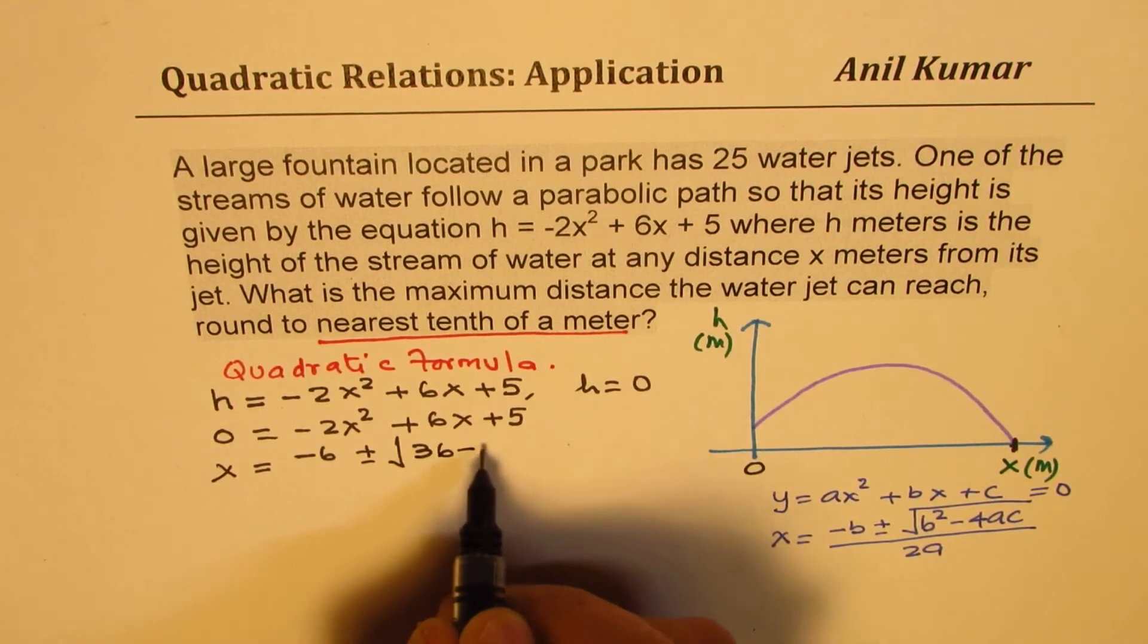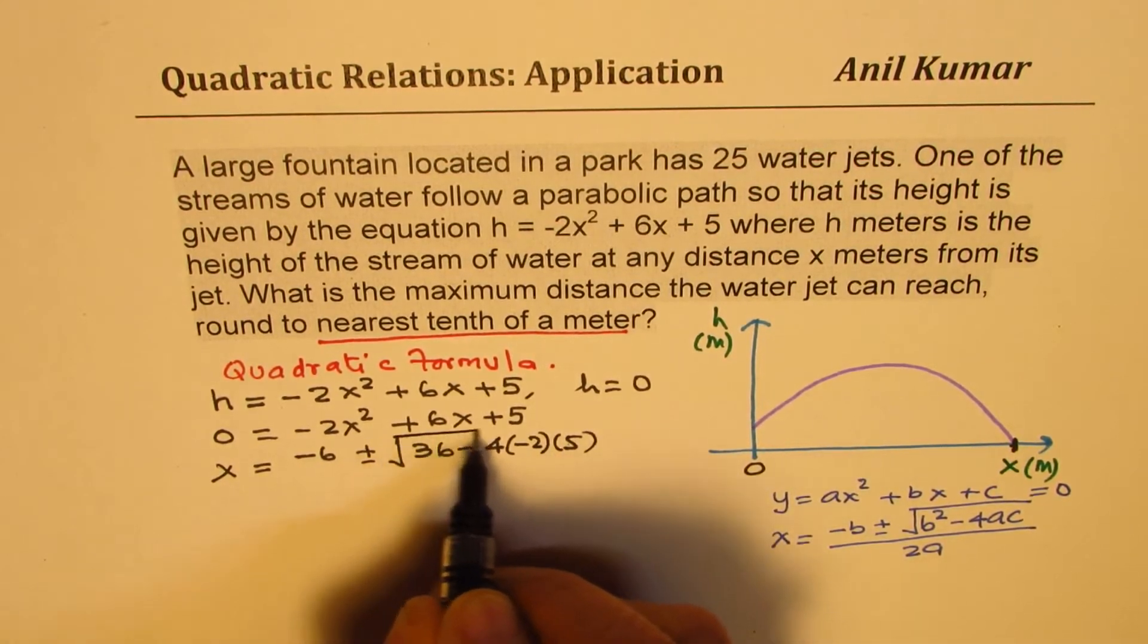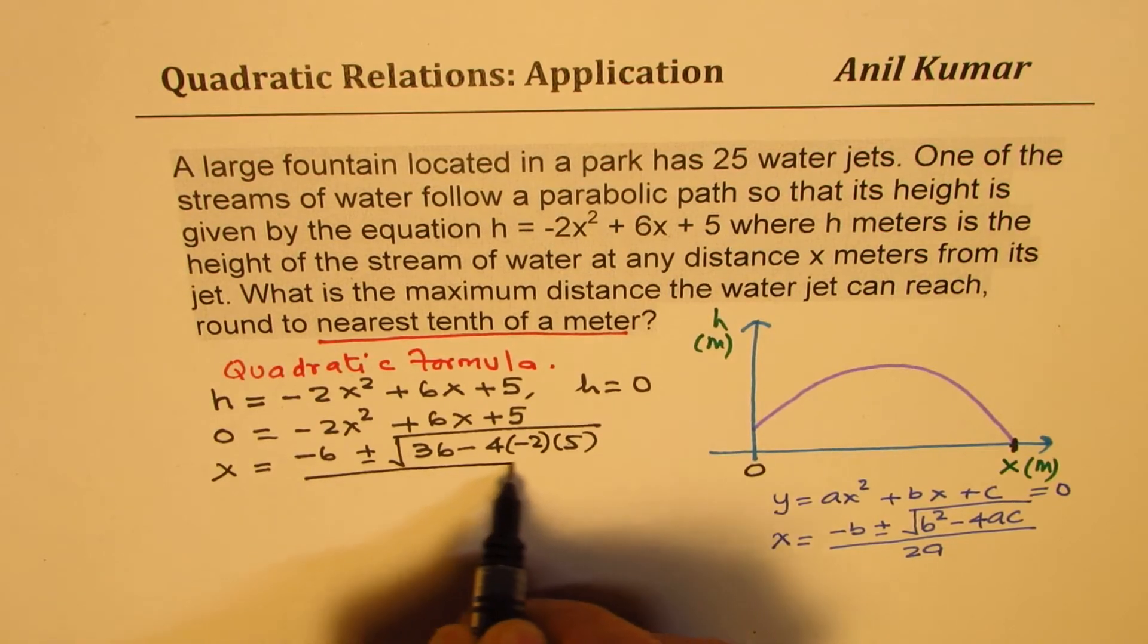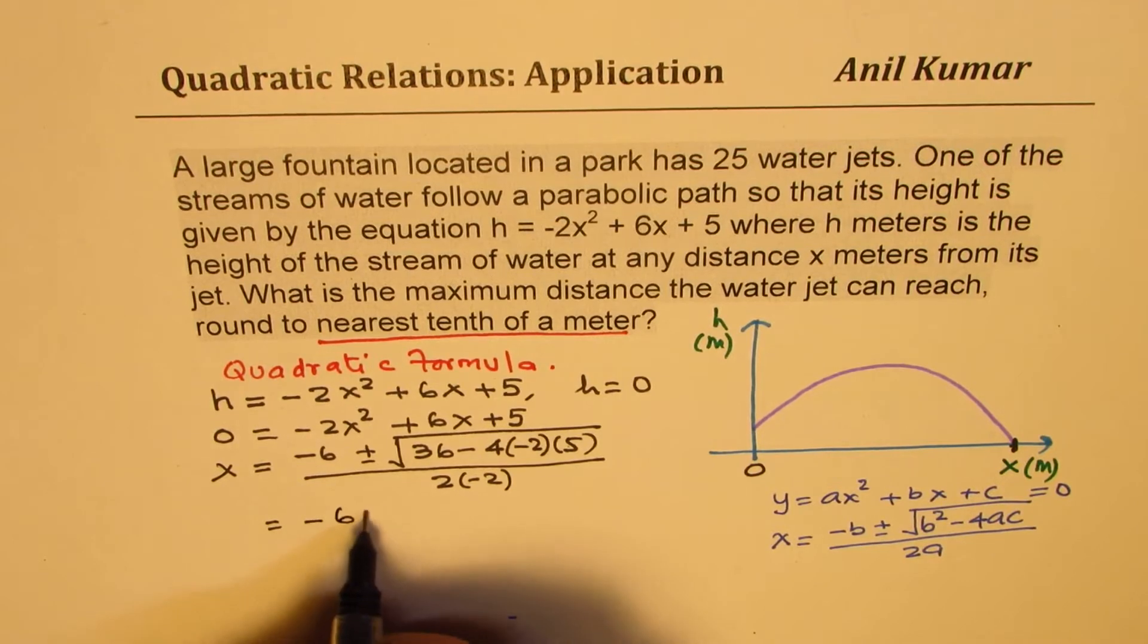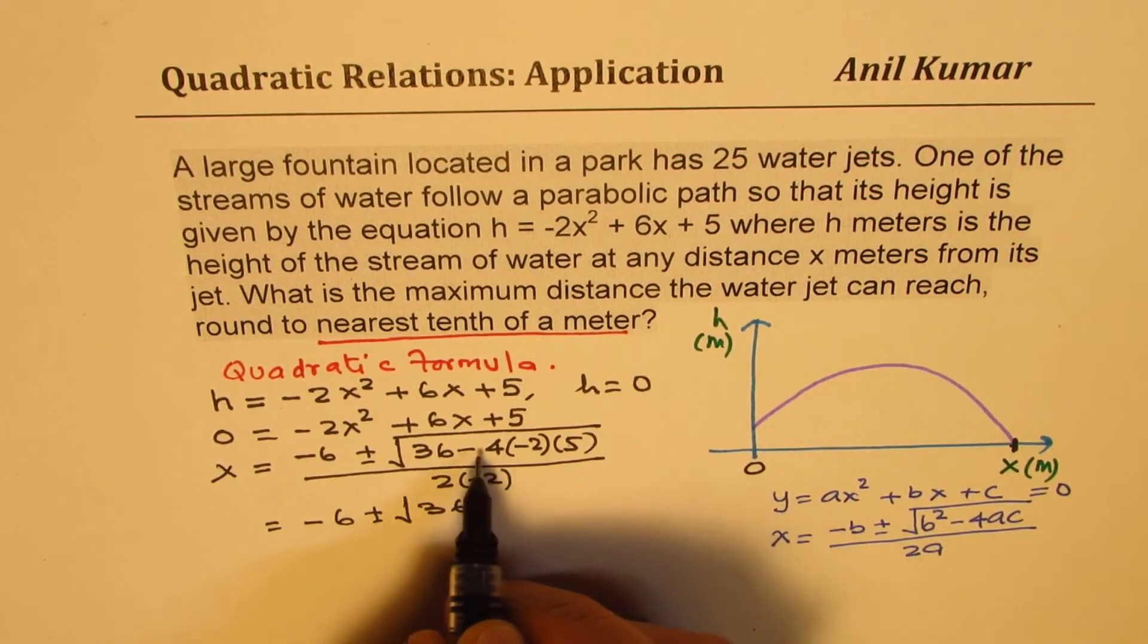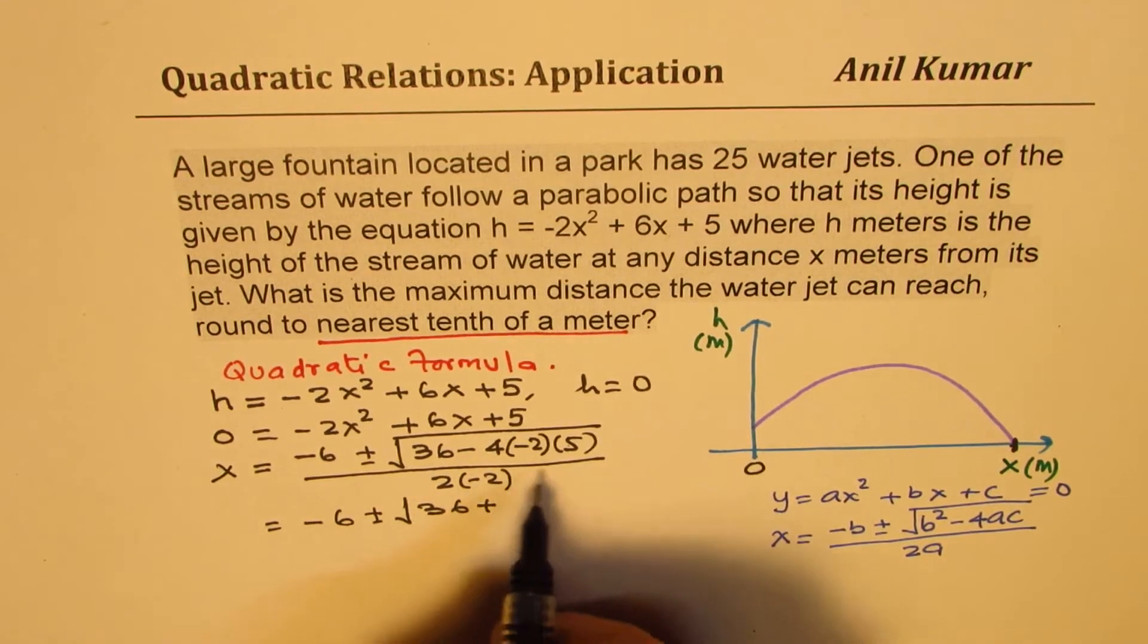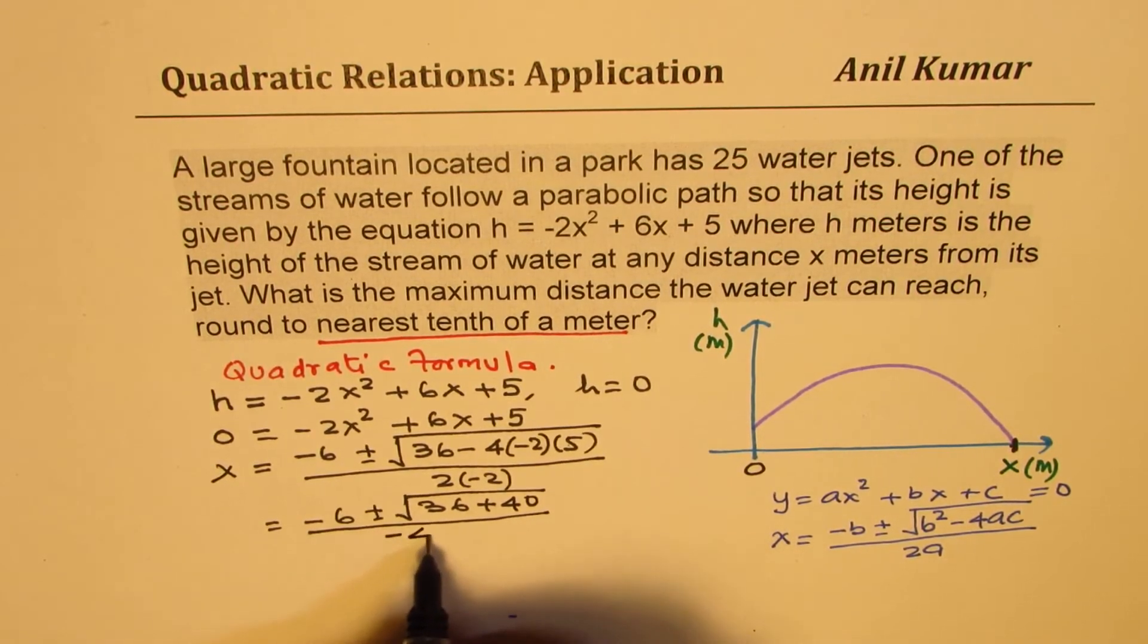which is 36, minus 4 times a, which is minus 2, times 5, divided by 2 times minus 2. So that gives us minus 6 plus minus square root of 36, and that can be plus, minus minus becomes plus 40, divided by minus 4.